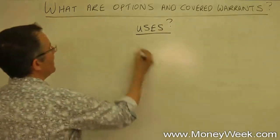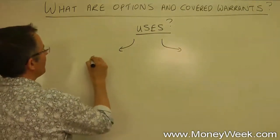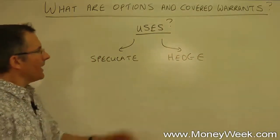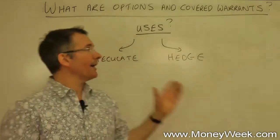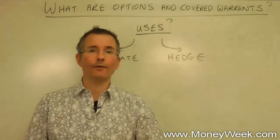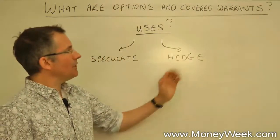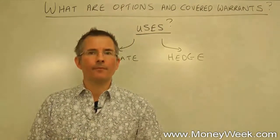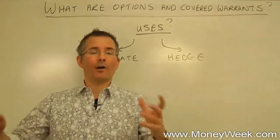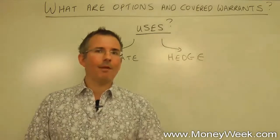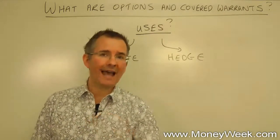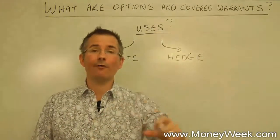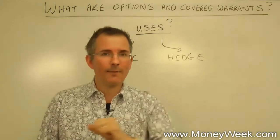There are basically two uses for any derivative: you can speculate with them or you can do something called hedging. Speculating is what it sounds like — there is a way of using these simply to gamble on rising or falling stock prices and make money that way. Hedging is more like: I'm worried about my share portfolio falling in value, what can I do? The obvious answer is sell all my shares, but that can be expensive, time-consuming and might trigger a tax bill. Another possibility would be to hang on to your shares and buy yourself a put option or a put covered warrant.